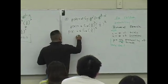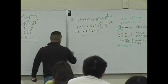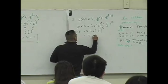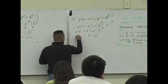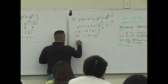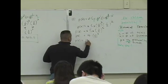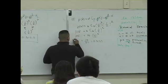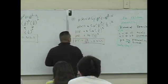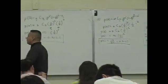So what is 5C3 now? It's 10. 10 times 1 half to the fifth power. So what do you get for P of three? 10 over what? 32, which is going to be 0.3125. So that is 4.